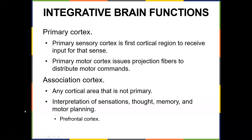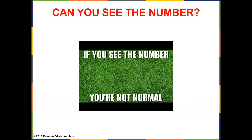You have the primary sensory cortex, which is the first cortical region to receive input for that sense. You have a primary motor cortex, which issues projection fibers to distribute motor commands. Then you have the association cortex — any cortical area that is not primary — which handles interpretation of sensation, memory, and motor planning. These are how the brain processes and integrates information.